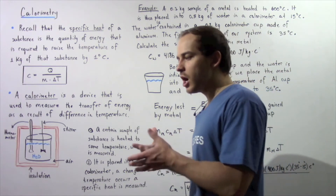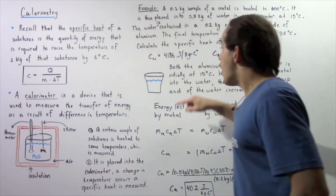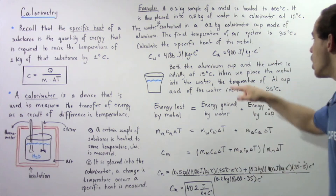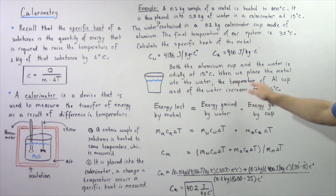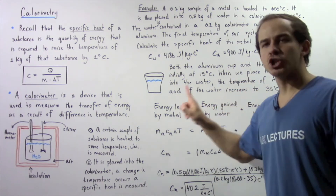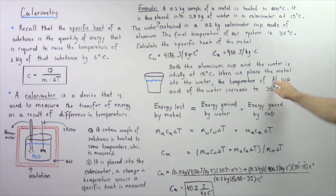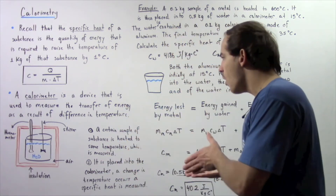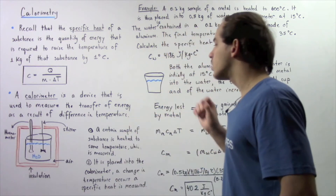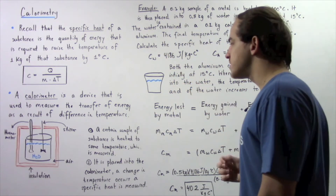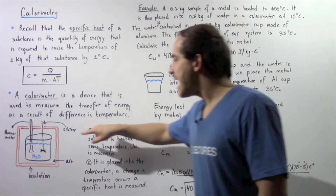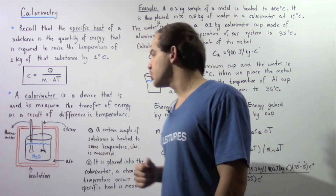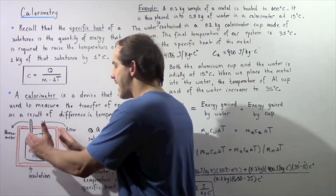Initially, before placing the unknown metal into the system, the aluminum cup and the water are both at 15 degrees Celsius. When we place the metal into the water, the temperature of both the aluminum cup and the water increases to 35 degrees Celsius. This means energy is transferred not only into the water but also into the aluminum cup. Because of the insulating layer, we assume no energy escapes into the environment, so all energy remains within our system.